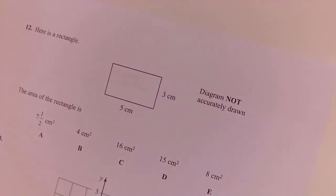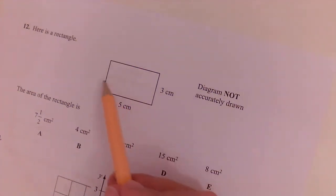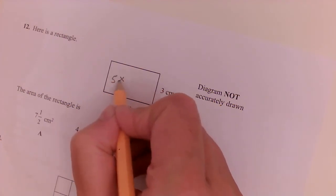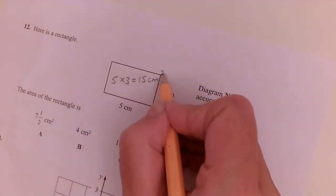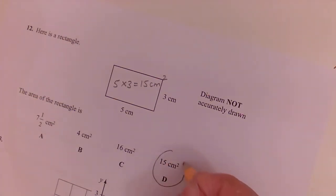Question 12. Here is a rectangle. Work out the area of the rectangle. Well, the area is the inside of the shape. So five times three is 15 centimeters squared. D.